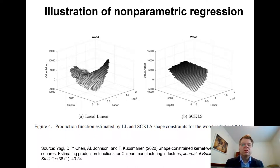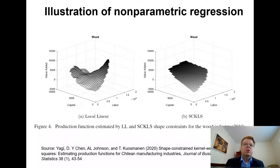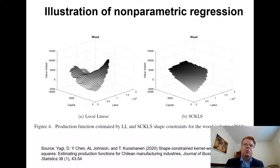That is the advantage of non-parametric regression: as a researcher, you don't need to specify in advance what shape the function can take. In linear regression it would just be a straight line; with polynomial functional form it would have to be polynomial. Non-parametric regression lets the data speak for themselves. However, sometimes you want to impose some structure. On the right-hand side figure, we consider a concave production function. Imposing shape constraints makes the regression function look much smoother, and can be very useful when examining substitution properties between capital and labor, returns to scale, or elasticities of scale.